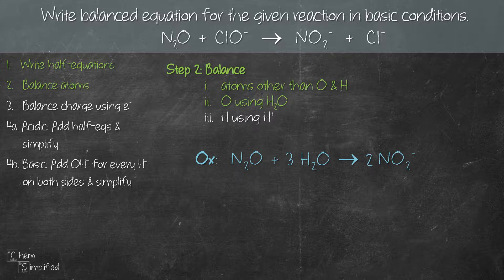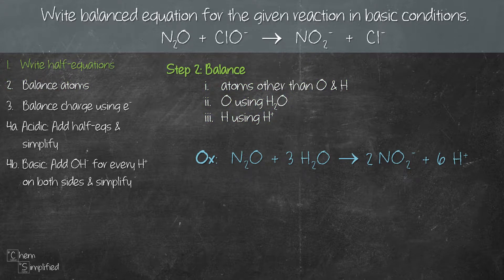Now we move on to balancing H using H⁺. Since we added 3H₂O we have 6H on the left, and since we don't have any hydrogen on the right we'll add 6H⁺ on the right hand side to balance the H. We're now done with the oxidation half equation. Let's move on to the reduction equation and do the same thing. We start with Cl — both sides have the same number of Cl so it's already balanced, so we move on to oxygen.